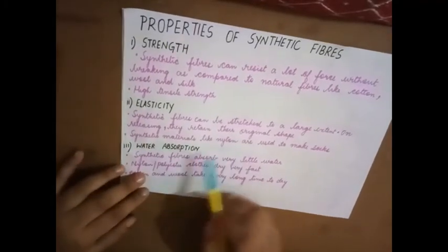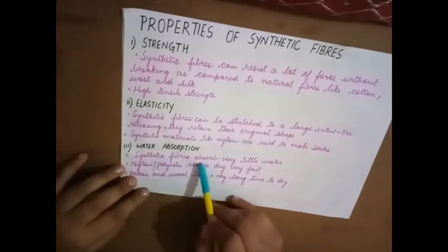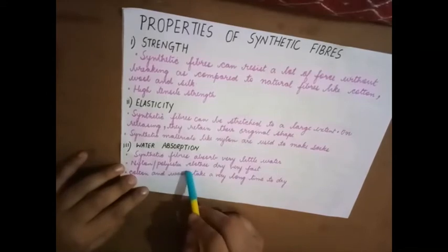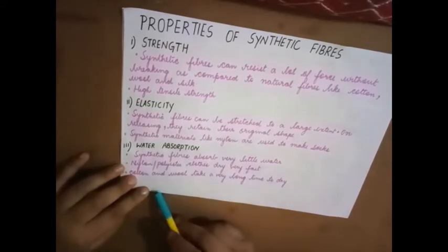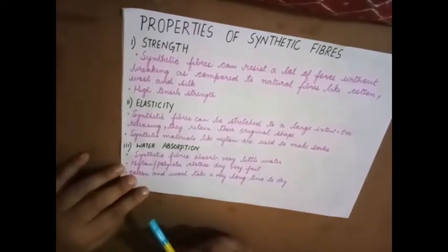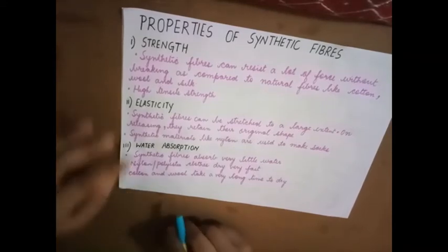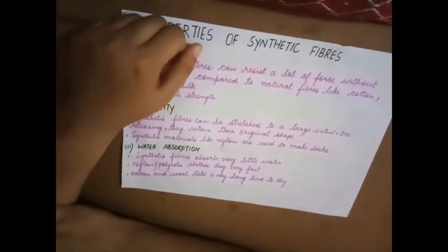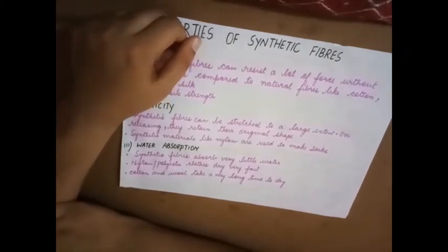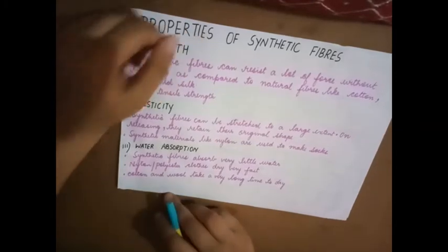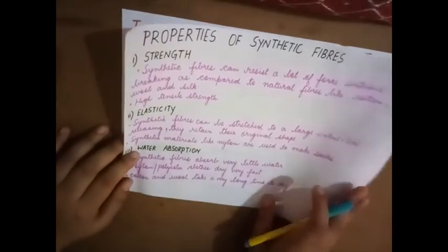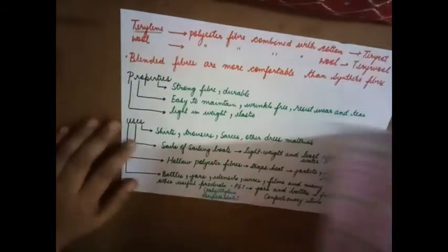Water absorption: Synthetic fibers absorb very little water. Nylon or polyester clothes dry very fast. Cotton and wool take a very long time to dry. Since cotton and wool absorb lot of water, it takes a longer duration of time for them to dry. But whereas nylon and polyester, they do not absorb lot of water, because of which they dry very fast.